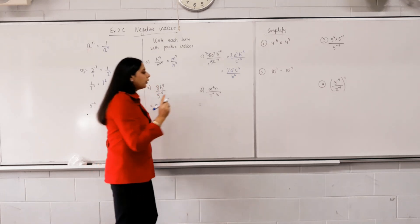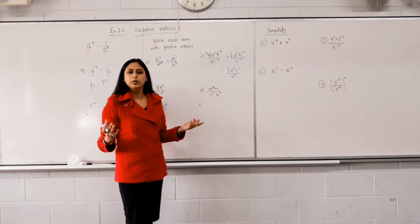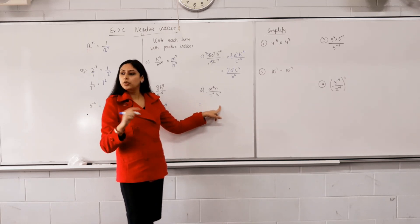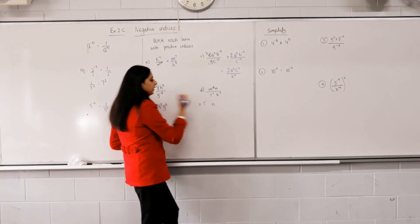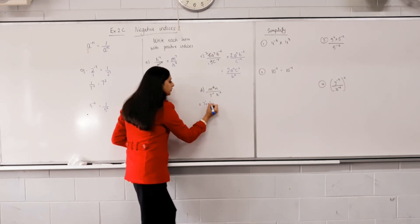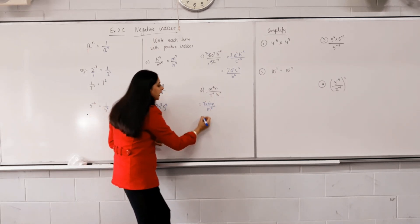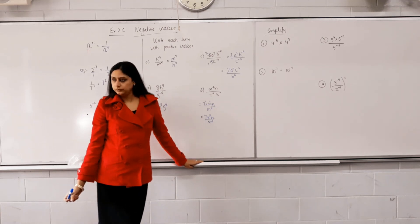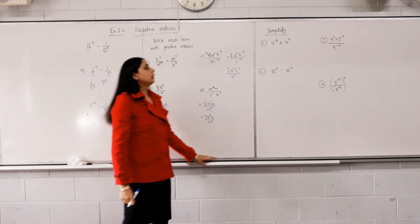Now, m needs to go, yes. n, no. n stays where it is. 7 needs to cross, k needs to cross. So n stays here, 7 becomes 7 to the power of positive 1, k becomes k to the power of 2, and m comes down. And now we don't write 7 to the power of 1, looks ugly. Much prettier, yes. Happy with that? Yes. How easy is it? Very easy.